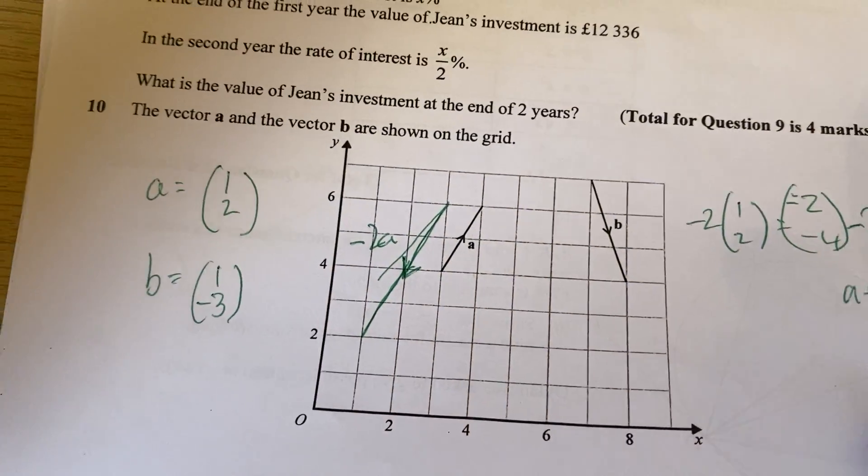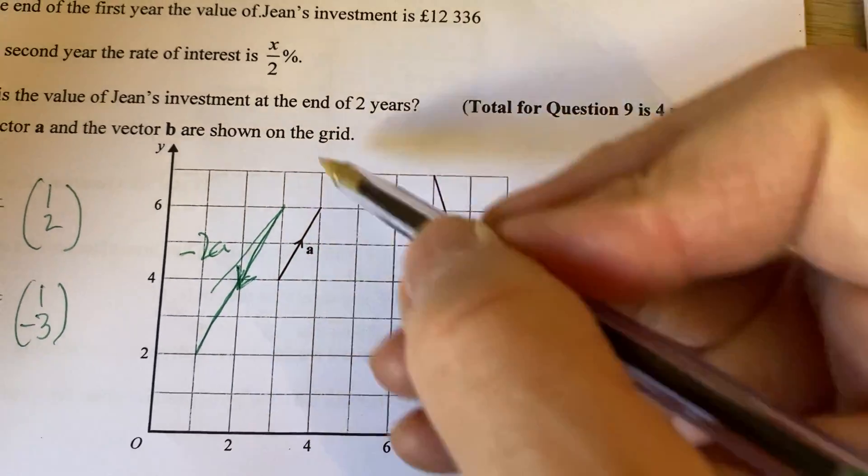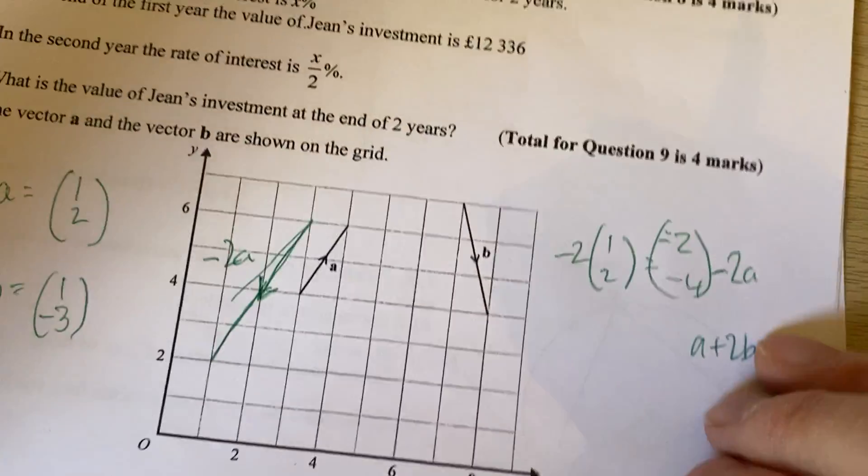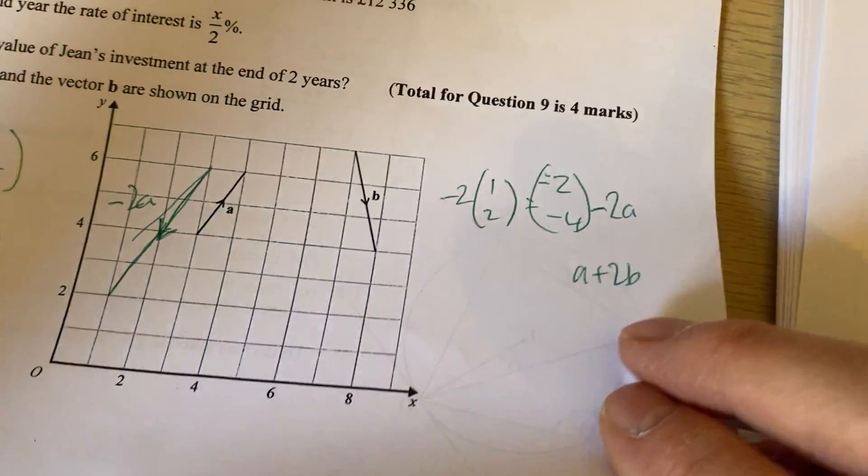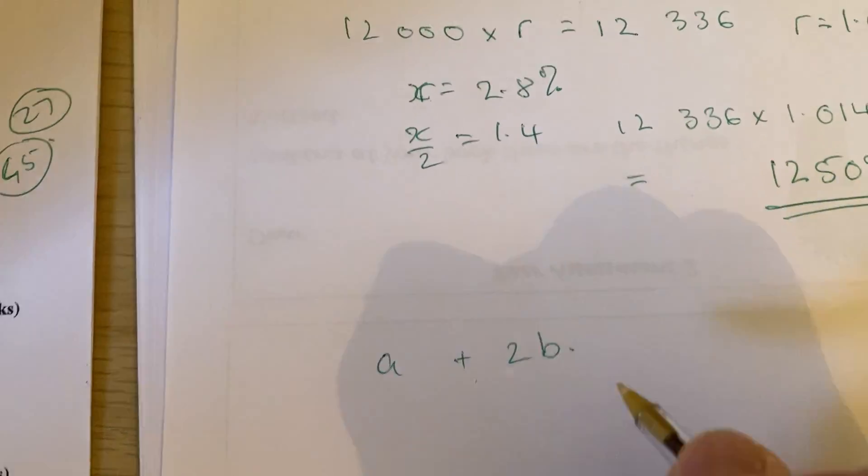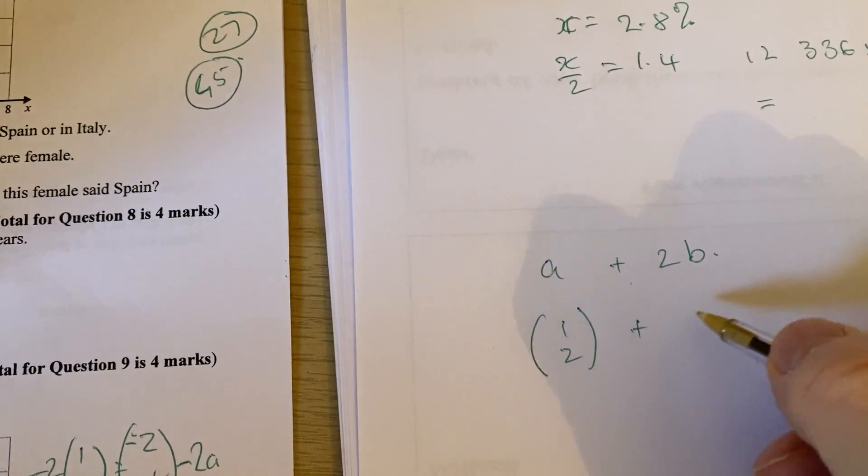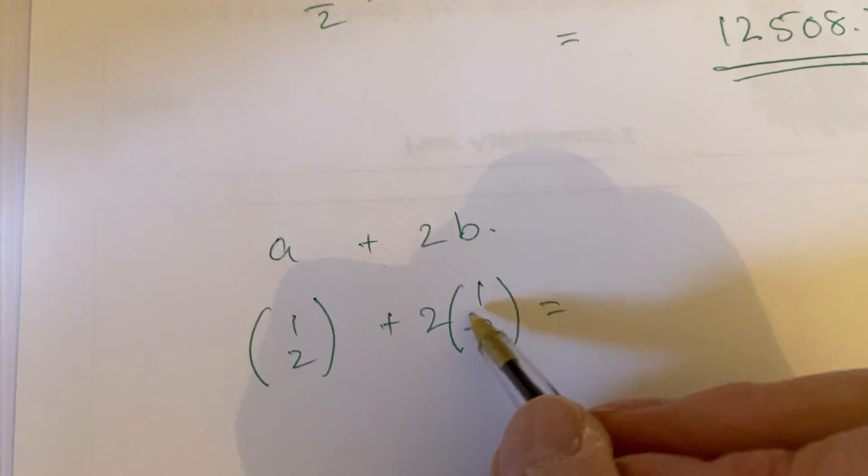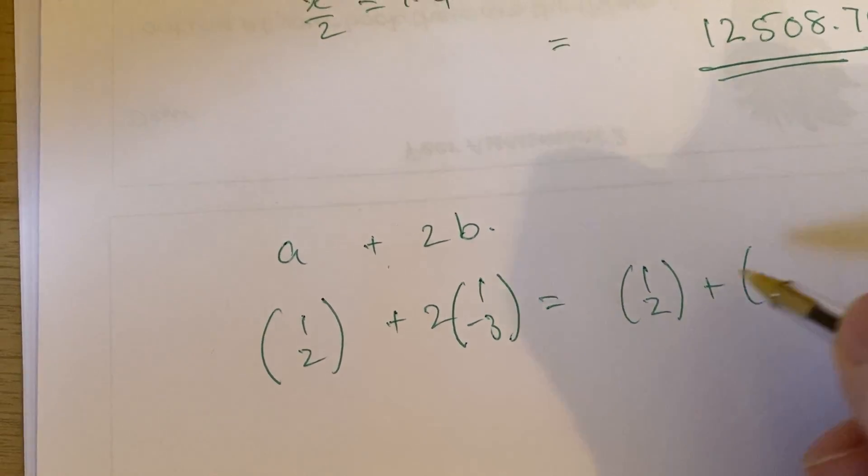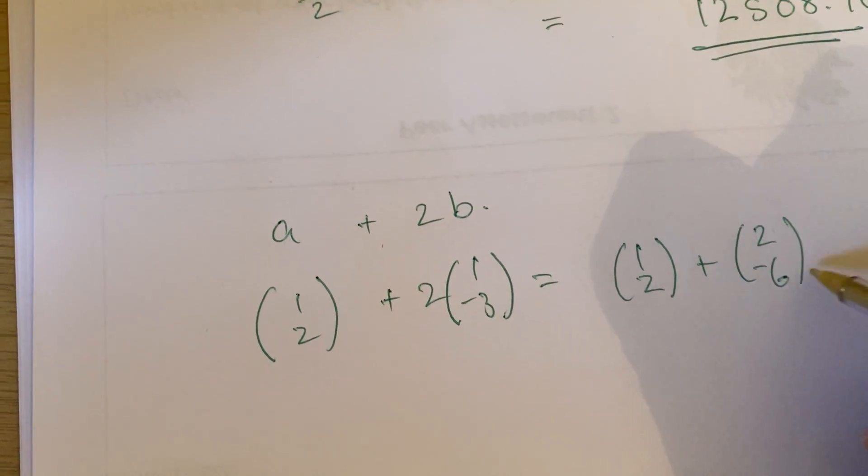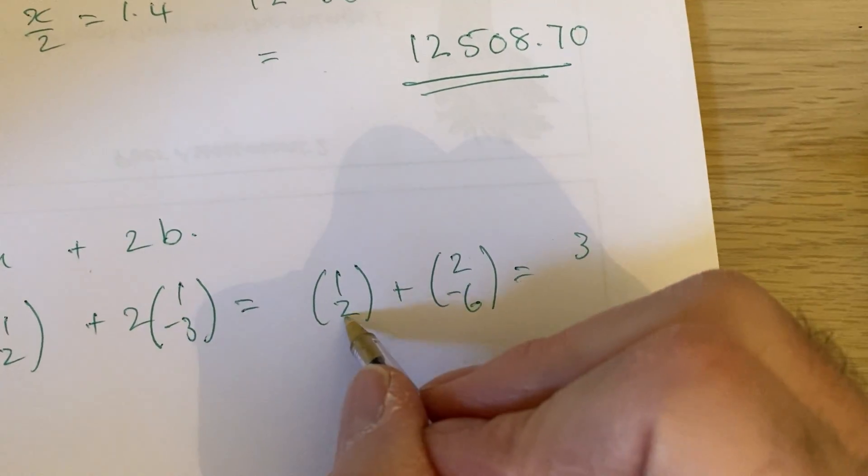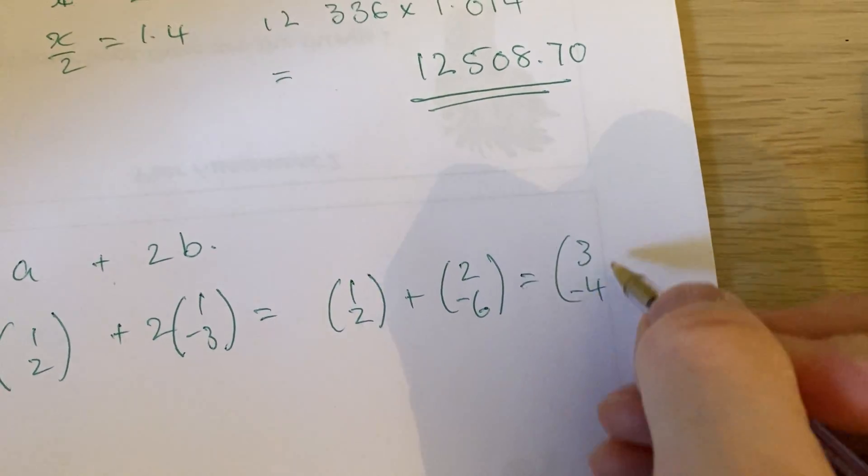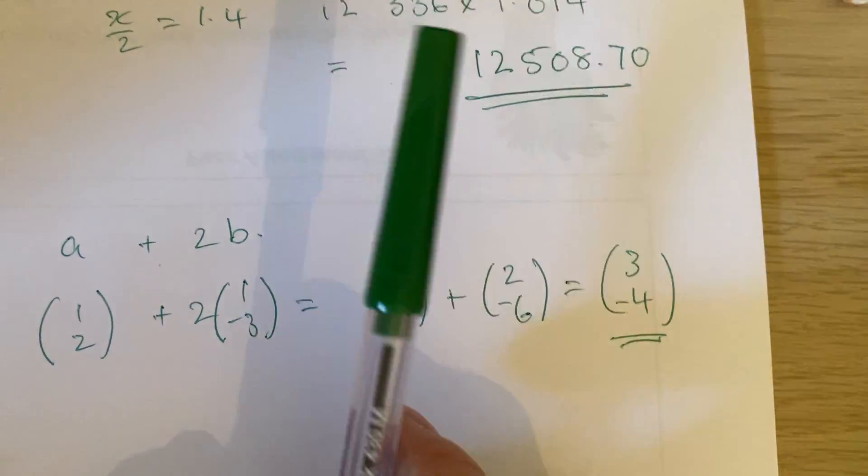And then it says, next question, work out A plus 2B as a column vector. Okay. A plus 2B. We know A, as we said, is 1, 2. And B, we've got as 1 minus 3. So that means if I do, let's sort out this one here. So it's 1, 2, plus. And then 2 lots of 1 is 2. 2 lots of minus 3 is minus 6. And now let's add these together. 1 plus 2 is 3. And 2 plus minus, so 2 minus 6 is minus 4. And that would be our answer.